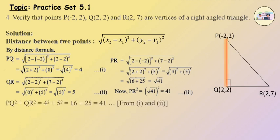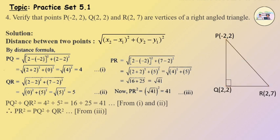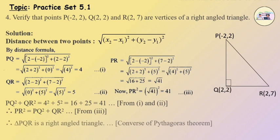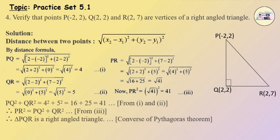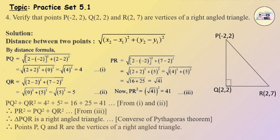Therefore PQ square plus QR square is equal to 4 square plus 5 square, which is equal to 16 plus 25, which is equal to 41, from equation 1 and 2. Therefore PR square is equal to PQ square plus QR square, from equation 3. Therefore triangle PQR is a right angle triangle by the converse of Pythagoras theorem. Therefore points P, Q and R are the vertices of a right angle triangle.